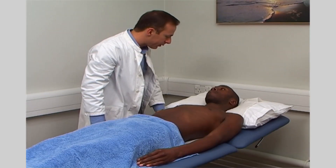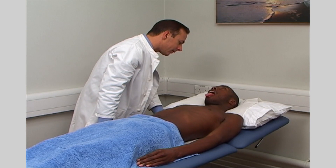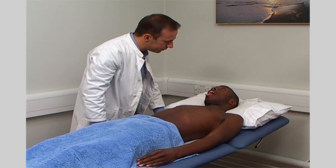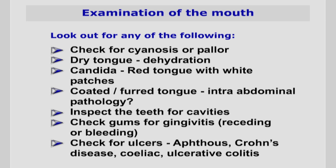As part of the examination of the digestive system, also examine the mouth. Check the health of the teeth and gums, the mucous membranes, the tongue, and oropharynx. Check for cyanosis or pallor. A dry tongue may signify dehydration. If the tongue is red with white patches, this may be Candida, a yeast infection. A coated or furred tongue can indicate intra-abdominal pathology. Inspect the teeth for cavities, check for gingivitis, receding or bleeding gums, and check for ulcers. Aphthous ulcers may be associated with Crohn's, coeliac, and ulcerative colitis.